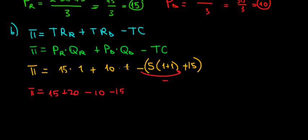Oh wait, 10 times 1. 10 times 1 is 10, not 20. I'm sorry about that. I'm not in a good shape today. So 15 plus 10 minus 10 minus 15. 10 and 10 cancel out. 15 and 15 cancel out. So the profit that the monopolist is making is zero. That's the economic profit.